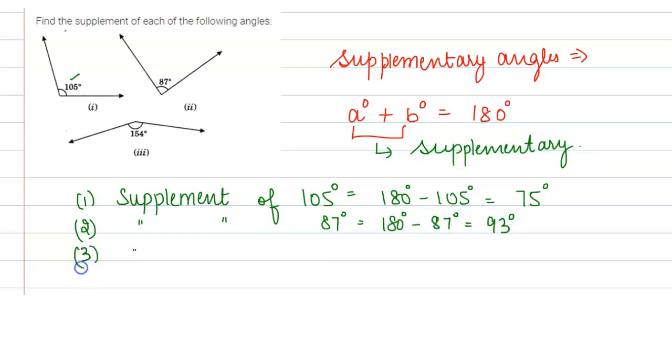And the last one is supplement of 154 degrees. So from here we get 180 degree minus 154 degrees. So I hope this question is clear. Thank you.